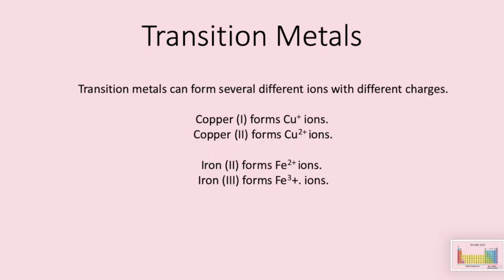Metals in the middle of the periodic table on the previous slide as yellow were transition metals. They can form several different ions with different charges and don't fit into a specific group. Their charge is always shown in brackets using roman numerals. For example copper I means that copper forms one plus ions. Copper II forms two plus ions and so on.